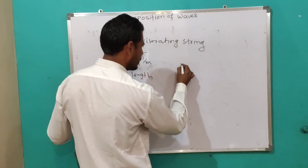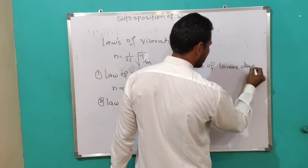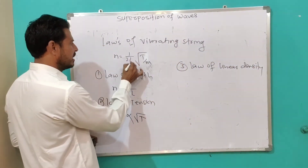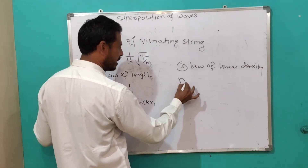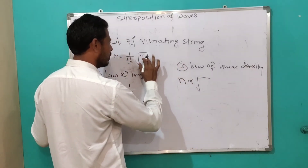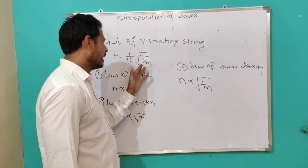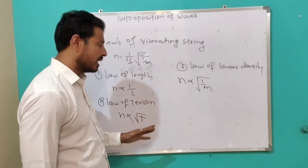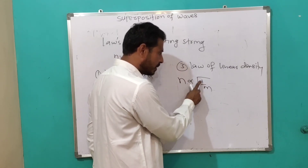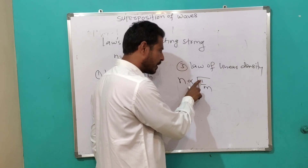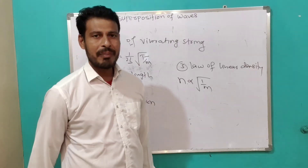Third law — Law of Linear Density: linear density means mass per unit length. If length L and tension T are constant, then the fundamental frequency is inversely proportional to the square root of the linear density m. These are the three laws of a vibrating string.